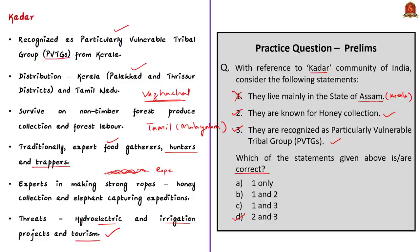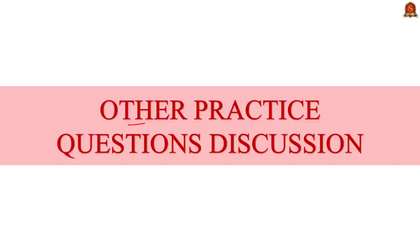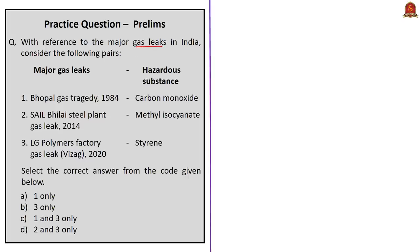Now let's take up other practice prelims questions. This question is based on major gas leaks in India and their hazardous substances. Three pairs are given and you have to choose correct pairs: Bhopal Gas Tragedy 1984, Salem-Bellary Steel Plant Gas Leak 2014, and LG Polymers Factory Gas Leak 2020. Of the given pairs, only LG Polymers factory gas leak is correctly matched with its hazardous substance — styrene. The first two pairs are incorrectly matched because Bhopal Gas Tragedy 1984 is related to methyl isocyanate, whereas carbon monoxide and methane leaked in the Salem-Bellary Steel Plant Gas Leak of 2014. Therefore, the correct answer is option B, 3 only.